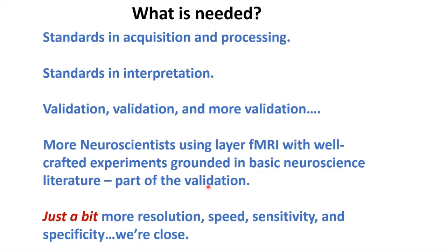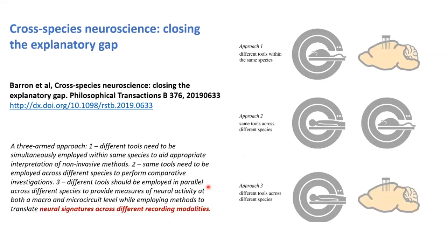I sense we're at a strange threshold where we need just a little bit more. I'm not really worried about resolution or speed, but we need sensitivity and a little bit more specificity, and then I think we'll be in good shape. The difference between needing 20 hours of averaging versus one hour is a very non-linear function at that sensitivity threshold, and I think we're just there.